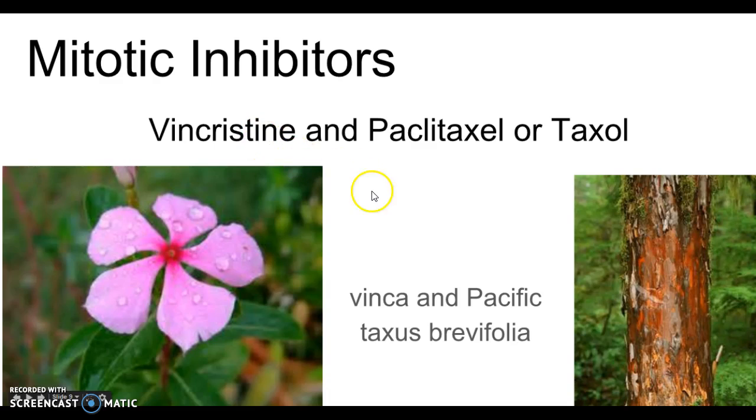So we have vincristine, vinblastine, anything that starts with VIN, you're going to know comes from a plant. The periwinkle plant is one of the mitotic inhibitors. And then taxol, or paclitaxel, comes from this Pacific taxus brevifolia. If you take the PAC of Pacific and match it with the TAX, you can see how it forms paclitaxel. That one's probably even more important than vincristine, because later on when we get into hormonal therapies, there's another drug called tamoxifen.